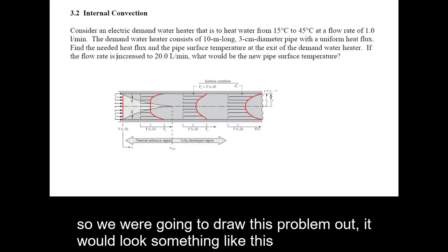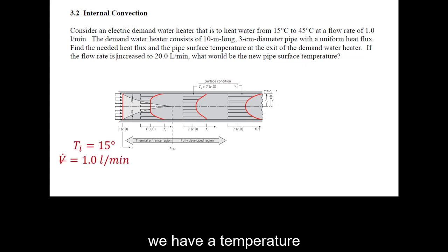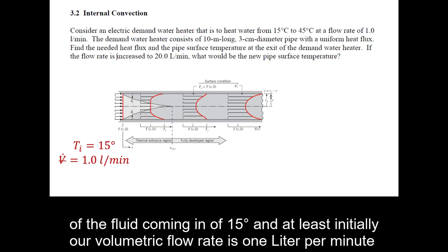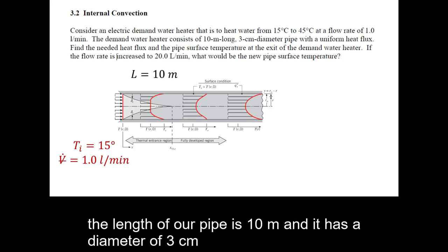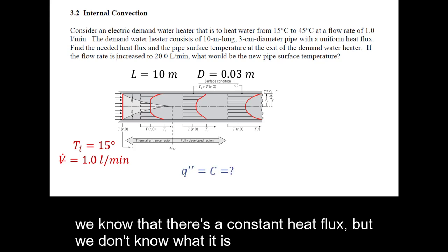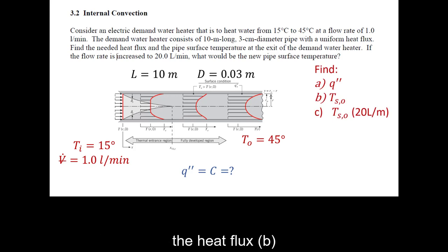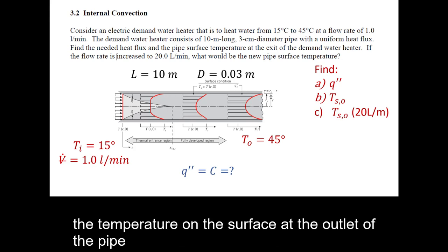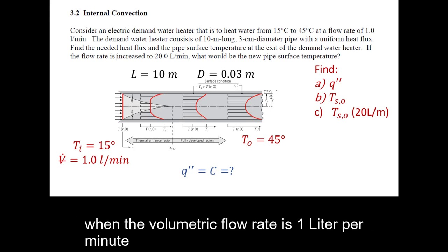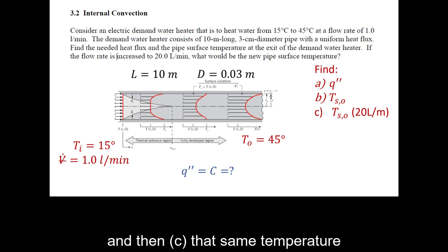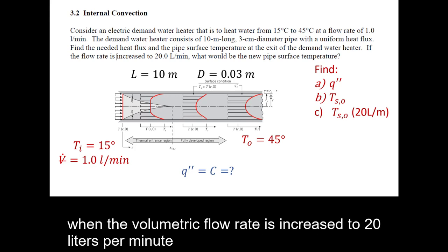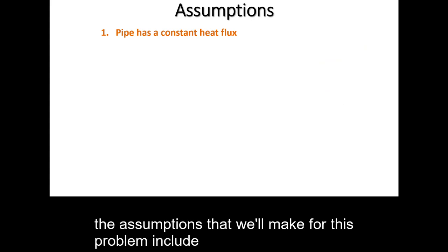If we draw this problem out, we have the fluid coming in at 15 degrees Celsius, with a volumetric flow rate of 1 liter per minute. The pipe length is 10 meters, diameter 3 centimeters, with a constant heat flux and an outlet temperature of 45 degrees Celsius. The three things we need to find are: (a) the heat flux, (b) the surface temperature at the outlet at 1 liter per minute, and (c) that same temperature when the flow rate is increased to 20 liters per minute.